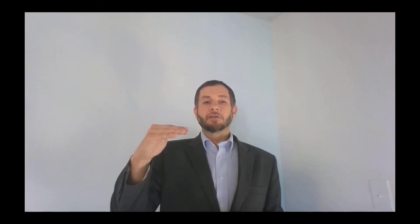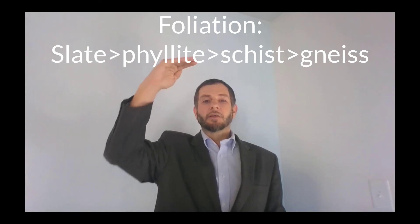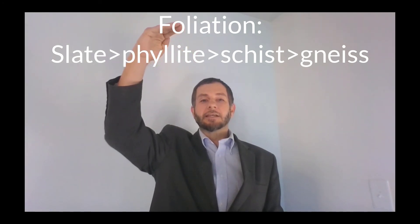And then you have the foliated phase. The foliated series starts out as a mud rock, also known as the sedimentary rock shale. And you go through grade one, which turns into slate. Grade two, phyllite. Grade three, schist. And the fourth phase is gneiss.